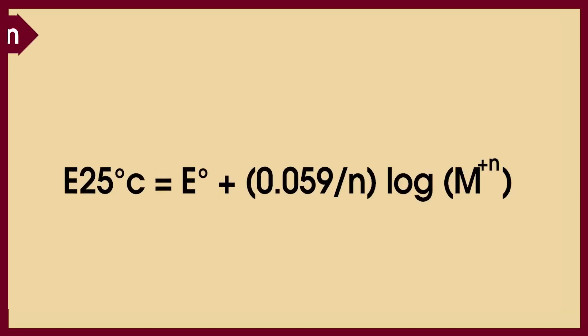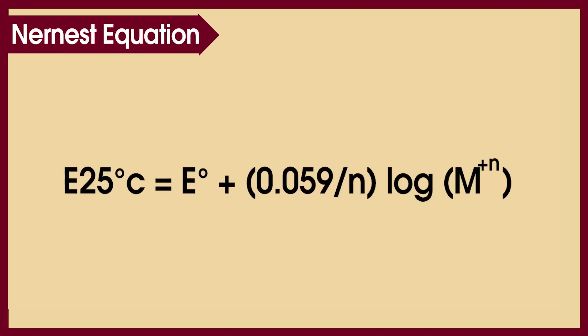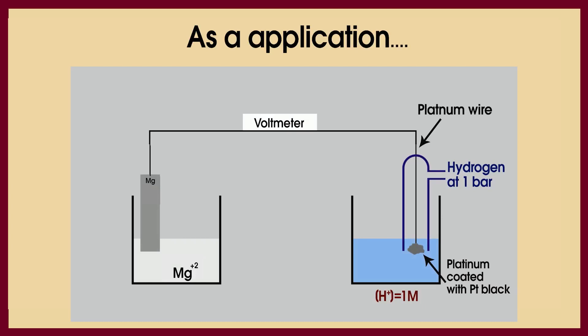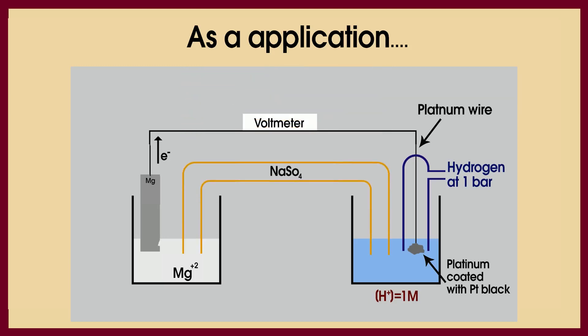According to the Nernst equation, the electrode potential — specifically the hydrogen electrode potential — depends on the cation concentration. As an application, we make two galvanic cells. The first is the magnesium-hydrogen galvanic cell, composed of magnesium immersed in its solution, a standard hydrogen electrode in its solution, and a salt bridge to neutralize all ions. The mechanism is that magnesium reduces hydrogen ions to hydrogen gas, because magnesium is below hydrogen in the series. Electrons move from magnesium to hydrogen, so the magnesium electrode erodes due to oxidation.